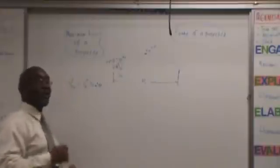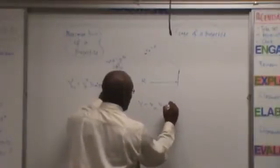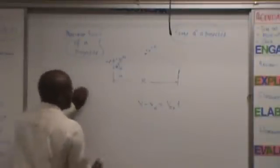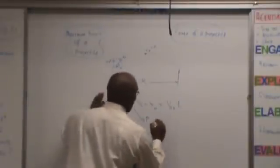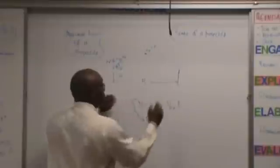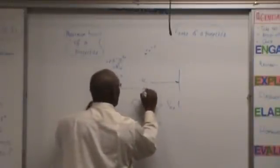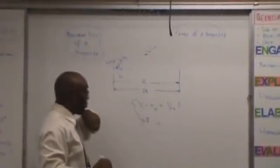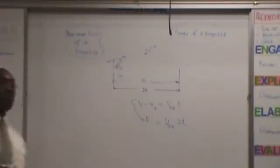Let's calculate the range. Which equation do you think we're going to use? X equals V₀X times time. Let's replace X with R for range. So R equals V₀X times the total time. It takes time T to go up, so it takes two T to travel the entire range. For the range, it's going to be V₀X times 2T.